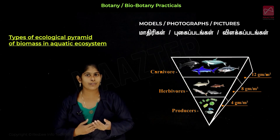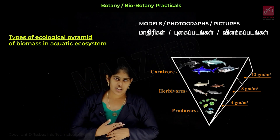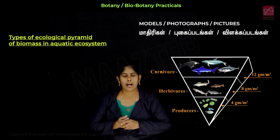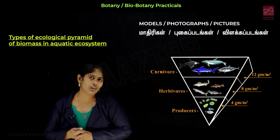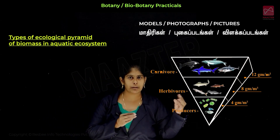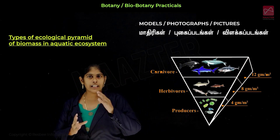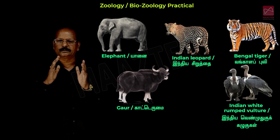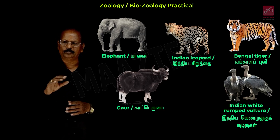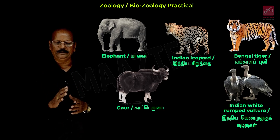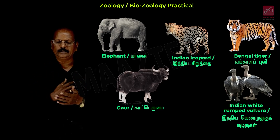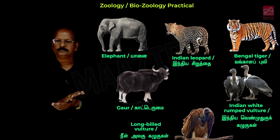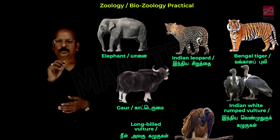For Biology, Botany section: slides 2 marks, specimens and models or photographs or charts 1 mark, solving problems 1.5 marks, experiments 1.5 marks, and economic importance of plants 1.5 marks — total 7.5 marks. Zoology section: experiments 2.5 marks, map marking or Mendelian principles 2 marks, prepared slides 1 mark, pictures 1 mark, and genetics 1 mark — total 7.5 marks. Combined: 7.5 + 7.5 = 15 marks.